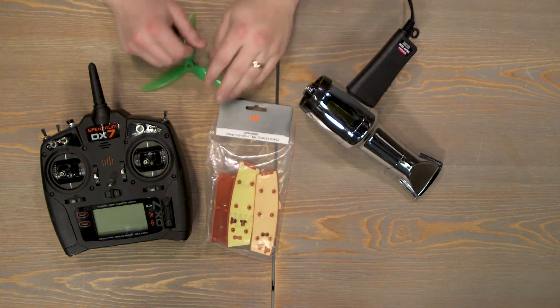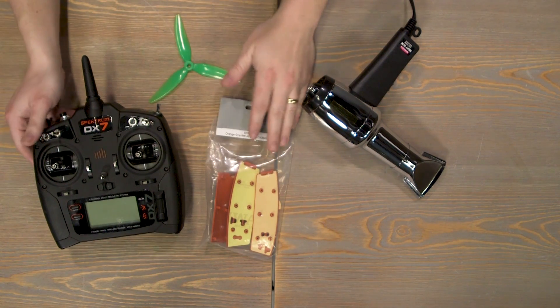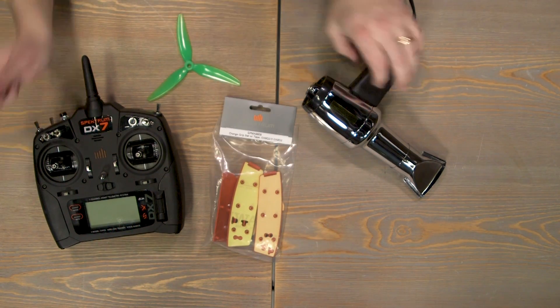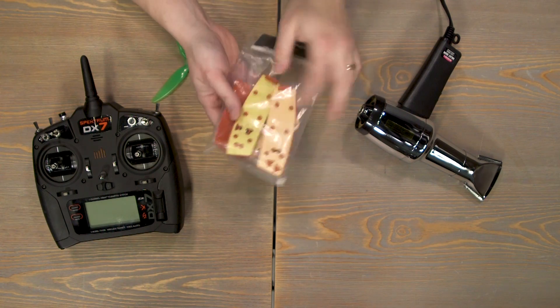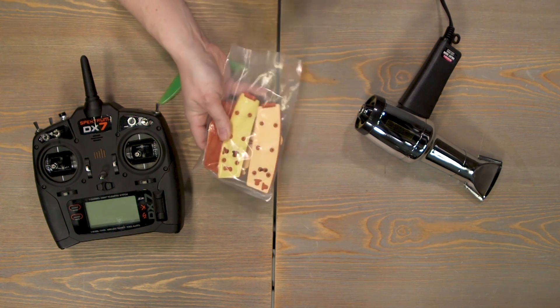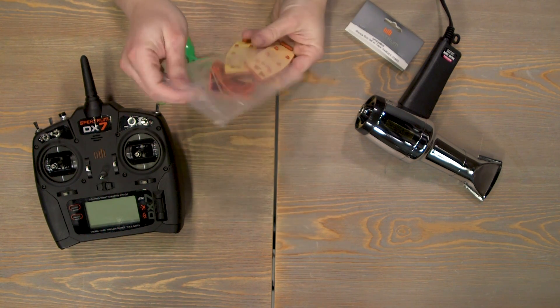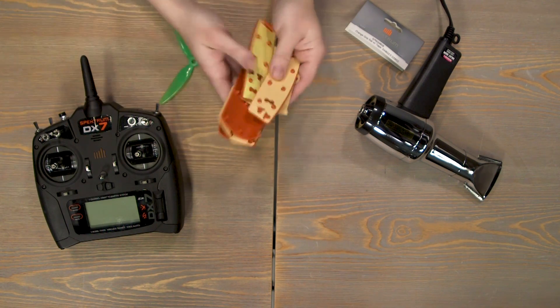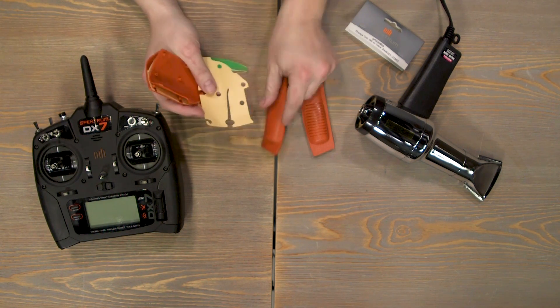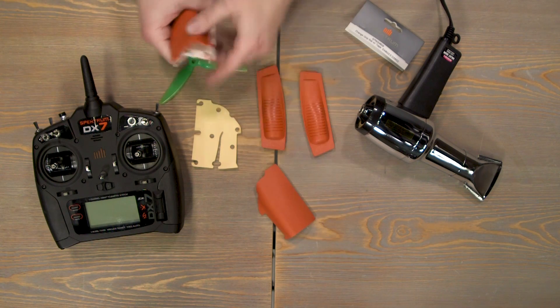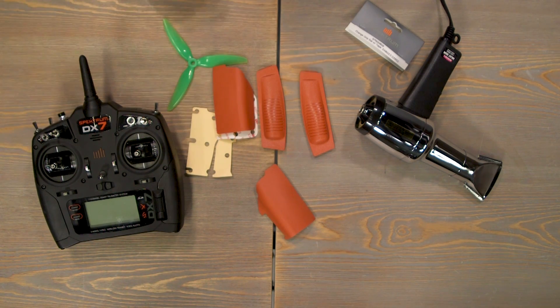Alright, so as you see we have everything we need right in front of us here. This is the grip set and it does come with the extra adhesive if you choose to use that. Let's pull that off, open it up. And we have all the orange grips for the DX7 which we are putting the grips on here.